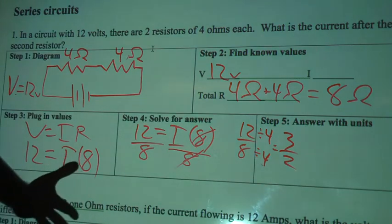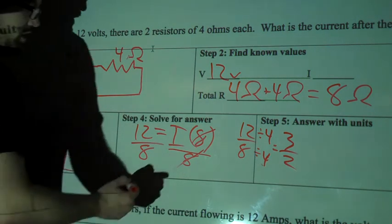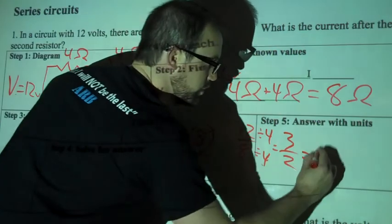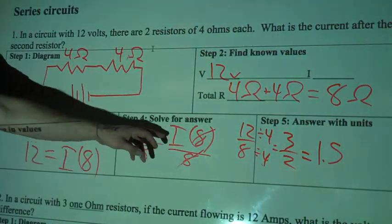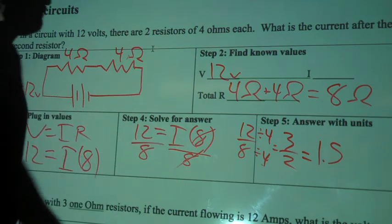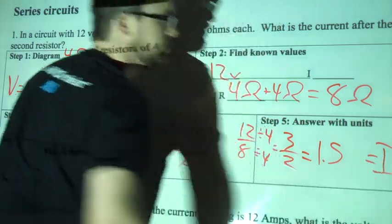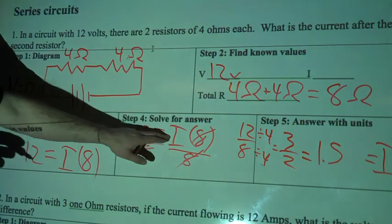If you can do this in your head, that's awesome. But that's actually going to equal 1.5, 1 and a half. And the variable that I was solving for is I. Right over here, where I equals, and then the units.